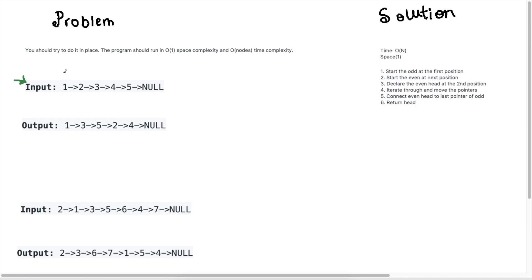So this is an odd index here. The first example is easy to understand because they've given us the index the same as the value. So we have one, three, and five — all odd indexes. We need to move these three to the front: one, three, five, and then move the even indexes to the end: two and four. That's what the question is asking.